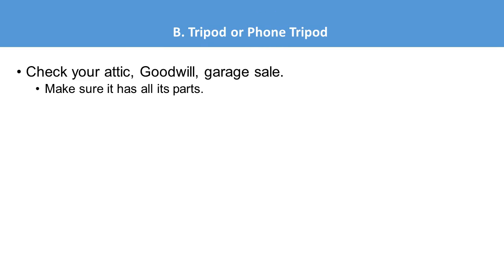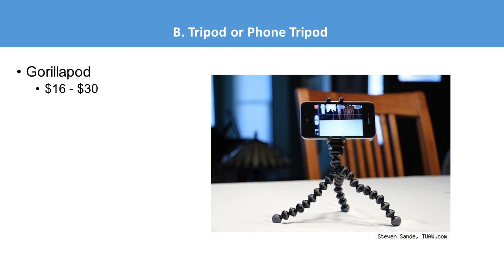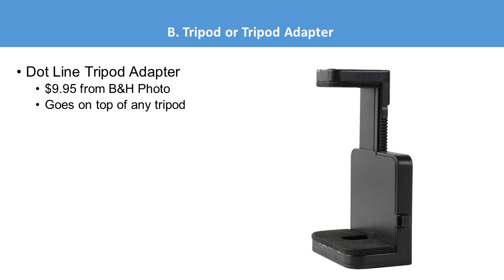For tripods, for basic video you don't need much beyond something that locks down your camera and keeps it still. Check your attic, check garage sales — it's next to the bread maker and the fondue pot at absolutely every garage sale on the planet. But make sure it has all its parts, bring your camera with you, and try to hook it up before you buy. Goodwill has a lot of them. You don't have to spend a lot of money unless you're doing camera movement like pans and zooms. For your first video project, keep it simple.